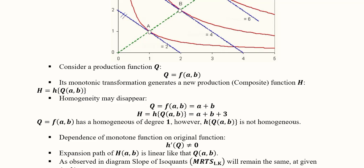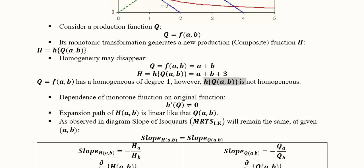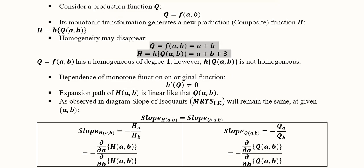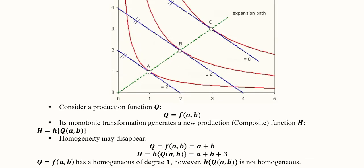However, a homogeneous function has the ability to become homothetic. As we have seen, this homogeneous function was transformed into a homothetic function. The degree of homogeneity was 1 before, but afterwards the monotonically transformed function does not remain homogeneous anymore. You can pause the video and check homogeneity by introducing lambda as the scalar. It also shows that H depends upon the original function Q — the homothetic function retains the angles and the ratios.